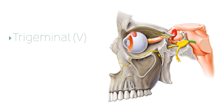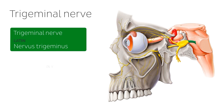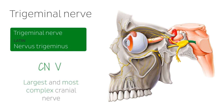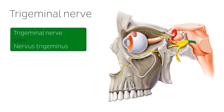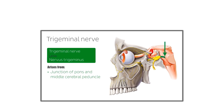Let's begin with the trigeminal nerve. As I mentioned before, the trigeminal nerve is the fifth cranial nerve and is often referred to as CNV. In addition to being the largest of the 12 cranial nerves, it is often considered to be the most complex. After arising from its nucleus, it emerges from the midbrain at the junction of the...